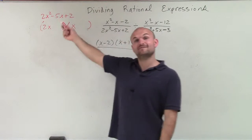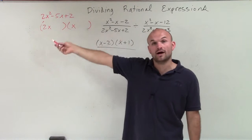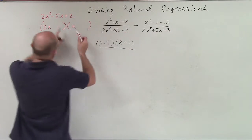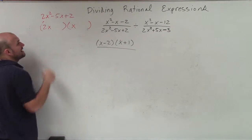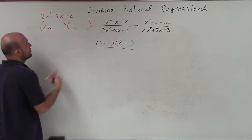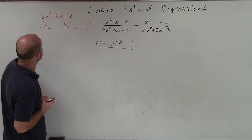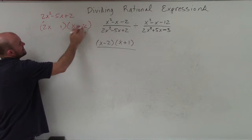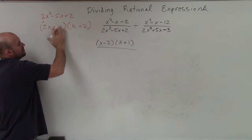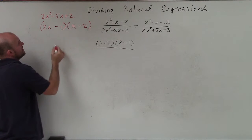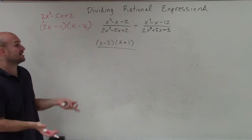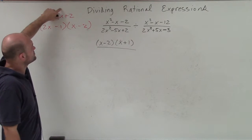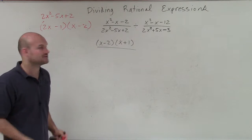Now we know our last two terms have to multiply to give positive 2, so it could be 2 and 1 or negative 2 and negative 1. We know they can't be positive because they have to add up to a negative number. So it has to be negative. If I do negative 2x times negative 2, that gives me negative 4x, plus x times negative 1, that also gives me negative 5x, which is my middle term. So that's my correct factored form.